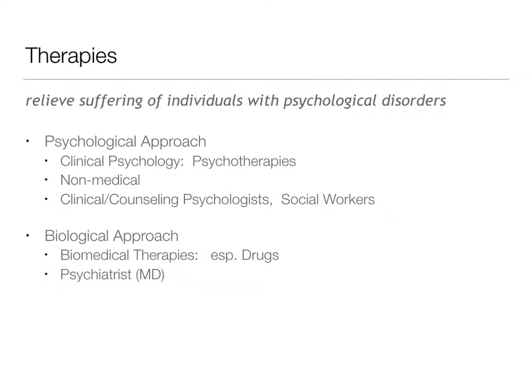The biological approach is primarily treated through a psychiatrist or other healthcare professional — an MD or DO with prescribing powers. In fact, many medications are actually prescribed by the individual's general practitioner rather than a psychiatrist. Finally, there's the sociocultural approach, which looks at the individual as part of a system, including group therapy, couples therapy, and family therapy.